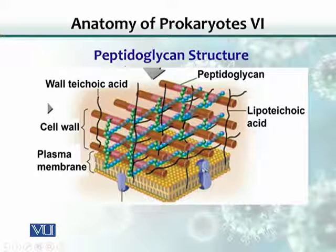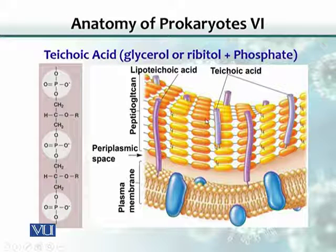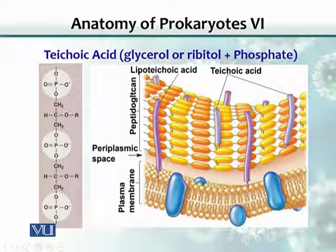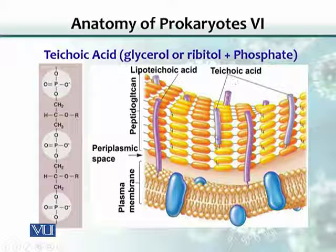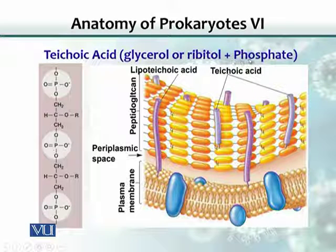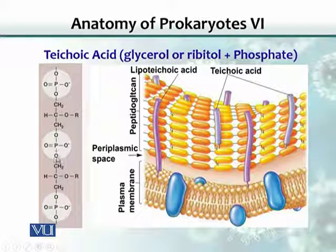There are also some integral proteins in the cell wall. In another view of the Gram-positive bacteria cell wall, you can see that the thick layer is basically peptidoglycan, with lipoteichoic acid inserted into the plasma membrane and wall teichoic acid remaining within the wall. Teichoic acid is composed of glycerol or ribitol — which is a sugar — and phosphates. There are three phosphates attached to this glycerol or ribitol.